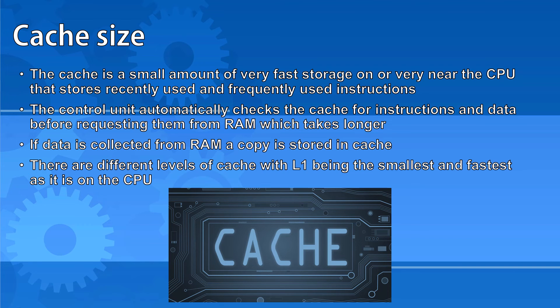There are different levels of cache within a computer processor, with level 1 being the smallest and fastest because it is physically on the CPU. Level 2 and 3 may actually be somewhere between the processor and RAM. In a multi-core computer, each core has its own cache. As more cache means fewer trips to RAM which takes longer, more cache means a better performing CPU.